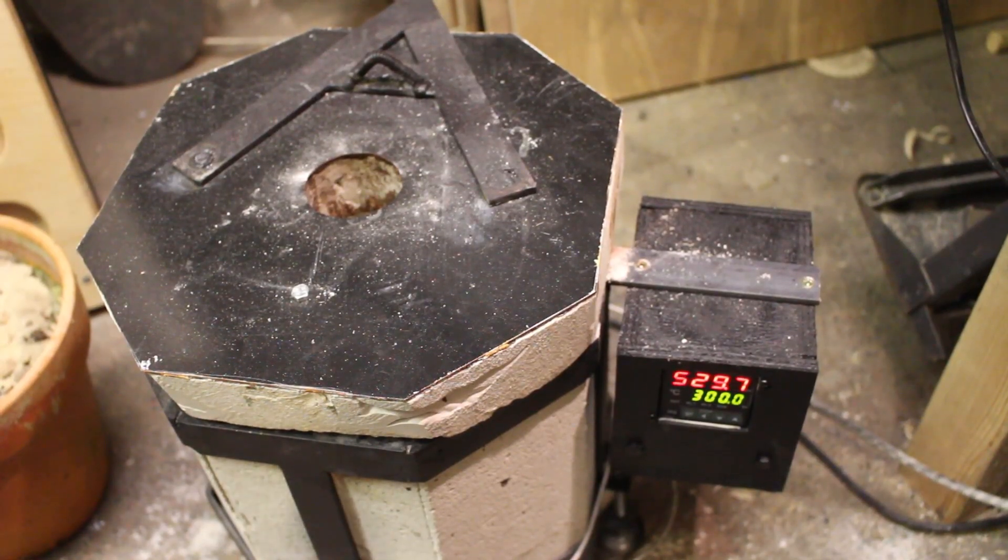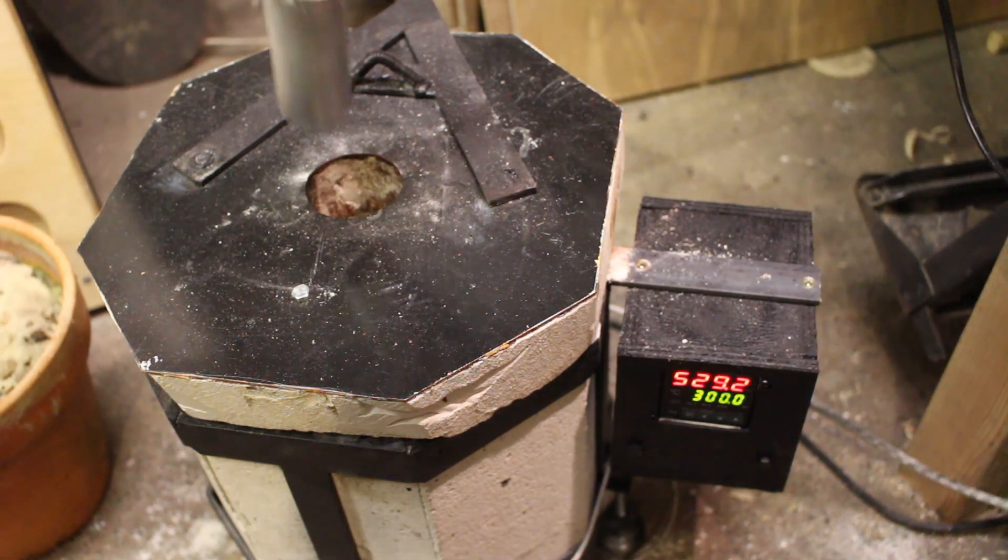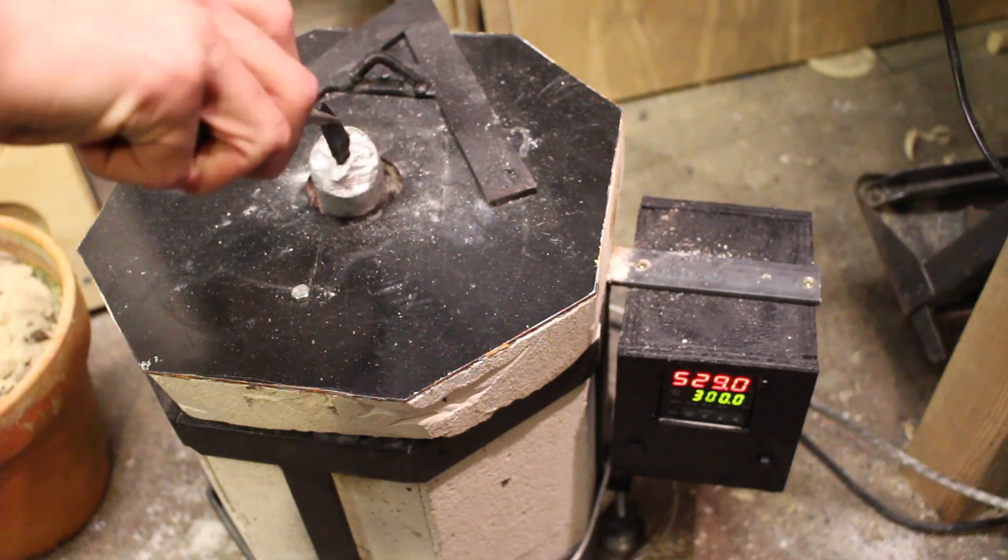To temper the knife I put it back inside the forge as it was cooling down for about two hours. Normally 500 degrees would be too hot to temper a knife but remember this is high speed steel which is a special alloy that doesn't want to be tempered very easily.